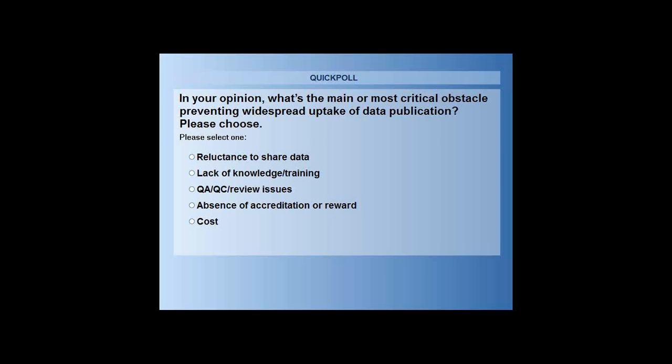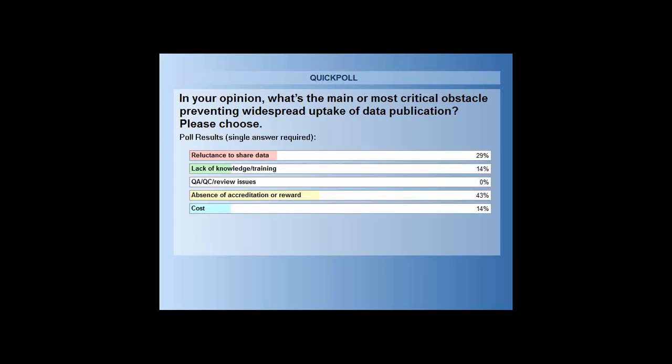We have 100 percent of votes, so let's look at the results. The results show that in your opinion the main major obstacle is: number one, absence of accreditation or reward at 43 percent; second, reluctance to share data at 29 percent; followed equally by lack of knowledge and training and the cost involved. Nobody voted for QA/QC review issues.